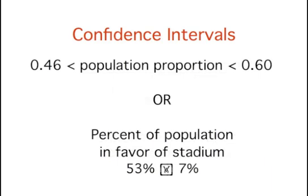Continuing with the example, if the same pollster used a method that contains the parameter 95% of the time it is used, he or she would arrive at the following 95% confidence interval: 0.46 is less than the population proportion, which is less than 0.60. The pollster would then conclude that most likely, somewhere between 0.46 and 0.60 of the population supports the proposal. The media usually reports this type of result by saying that 53% favor the proposition, with a margin of error of 7%.